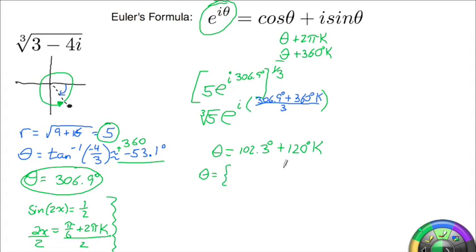So one of my solutions is 102.3, then I add on 120. So plus 120, 222.3, and then add on another 120, or 342.3.